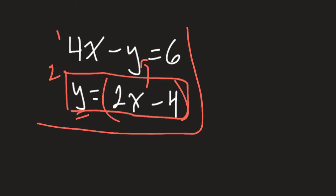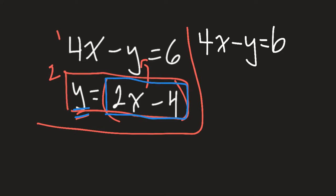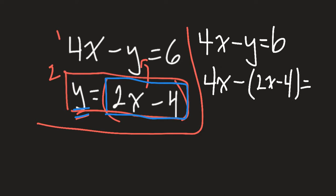I'll start by rewriting my first equation. Our first equation is 4x minus y equals 6. The next thing I do is substitute — because y is by itself, we're going to substitute this expression in for y. So we'll have 4x, then I write my minus symbol, write my bracket, go 2x minus 4, close my bracket, equals 6.